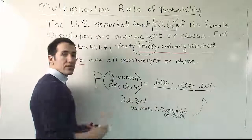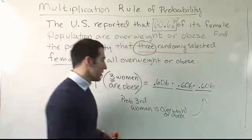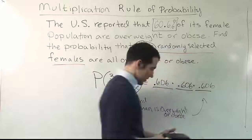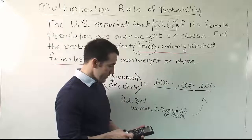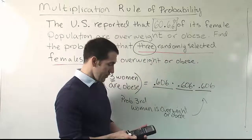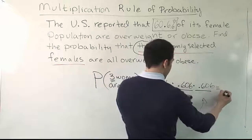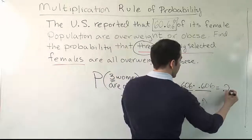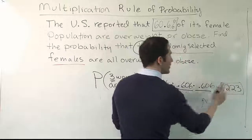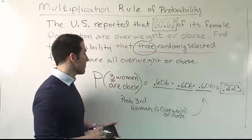The solution is to multiply all three numbers together. So 0.606 to the third power, and we end up with a final result of 0.223, or about 22.3%.